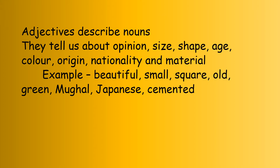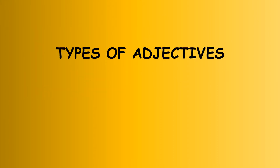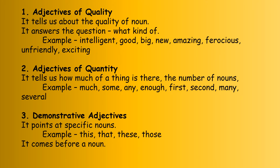Let us look at the types of adjectives. The first one is adjectives of quality. Quality tells us about the quality of the noun — what kind of noun you are describing. For example: intelligent, good, big, new, amazing, ferocious, unfriendly, exciting — all these are adjectives of quality.